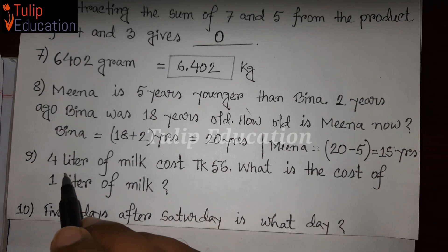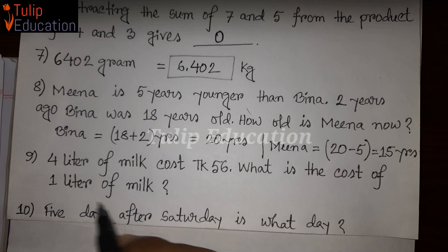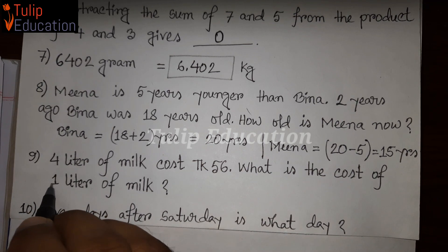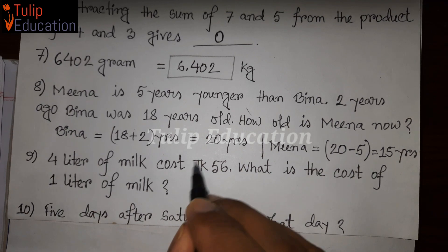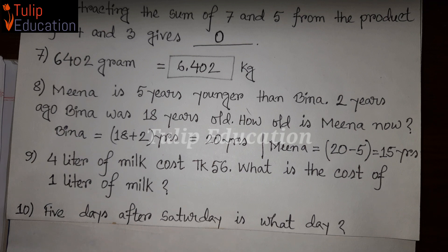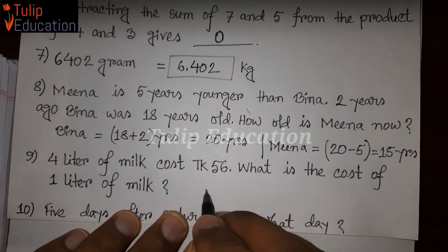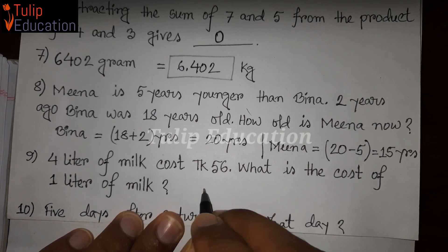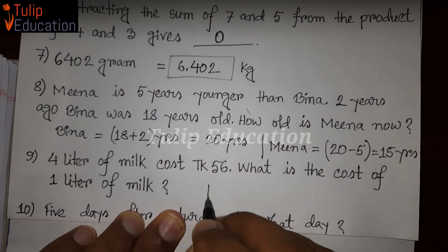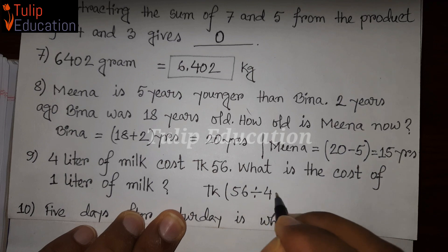Question number 9: What is the cost of 1 liter of milk? We have to divide. The cost of 1 liter is 56 divided by 4.